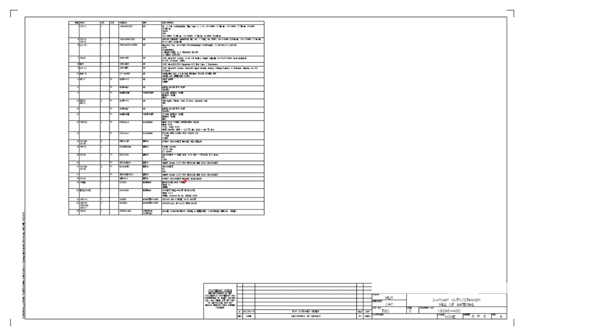The last thing you'll typically see on a drawing set is the bill of material — basically all the ingredients used to make the control panel. It lists all the parts, tells you where each component is located, and defines its function within the drawing set. If something ever fails or you need a replacement, the bill of material tells you exactly what it is.